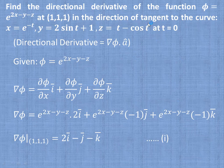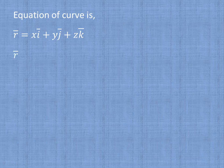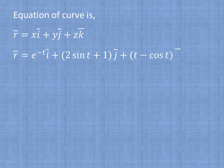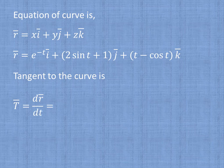To find the directional derivative along the tangent to the curve, first write the equation of the curve: r̄ = xî + yĵ + zk̂. Substituting the given parametric values: r̄ = e^(-t)î + (2sin(t) + 1)ĵ + (t - cos(t))k̂. To find the tangent, differentiate with respect to t: T̄ = dr̄/dt = -e^(-t)î + 2cos(t)ĵ + (1 + sin(t))k̂.